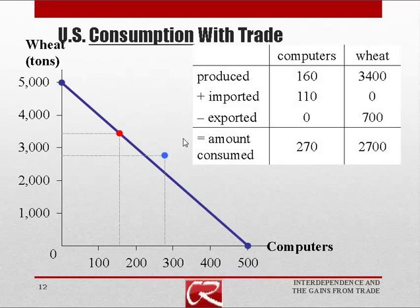Now each country trades. When you trade, you give away your exports, so U.S. wheat consumption is smaller than its production. The U.S. produced 3,400 wheat, exported 700 of it, leaving 2,700 for domestic consumption. It produced 160 computers and imports 110 from Japan, so it actually gets to consume 270 computers — more than it produced.